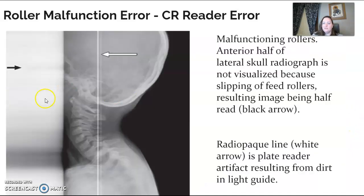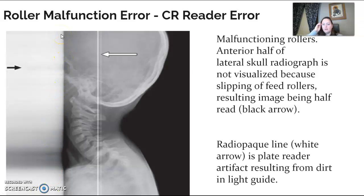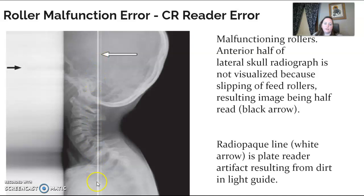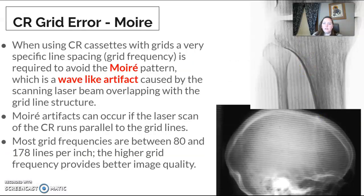Here's another one — this is a complete malfunction. There's a bright line here and then this area is completely not exposed. There's a white line going through that possibly had dirt on the rollers. So it happens.